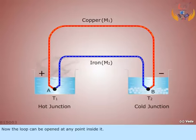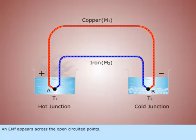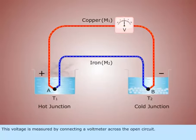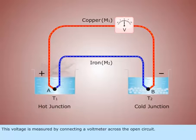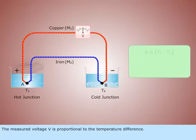The loop can be opened at any point inside it. An EMF appears across the open circuit points. This voltage is measured by connecting a voltmeter across the open circuit. The measured voltage V is proportional to the temperature difference.